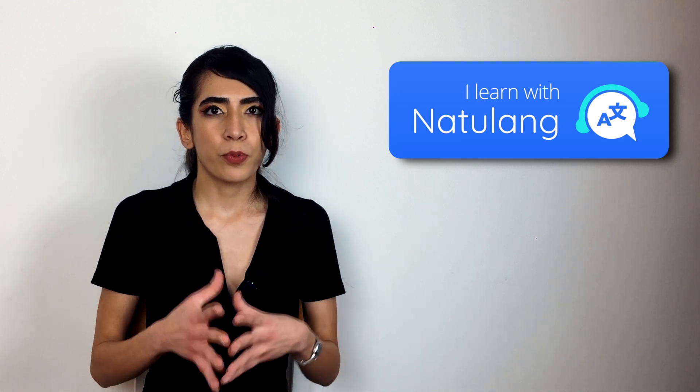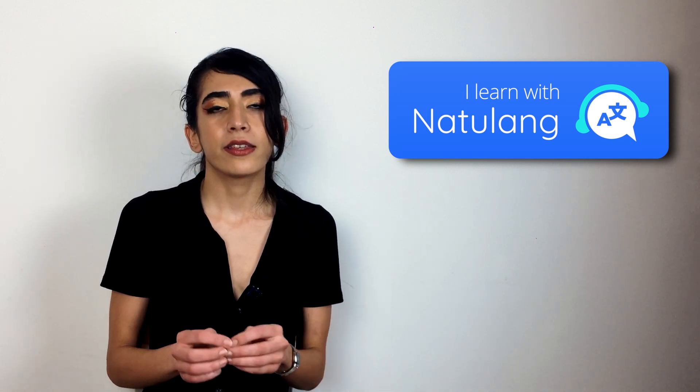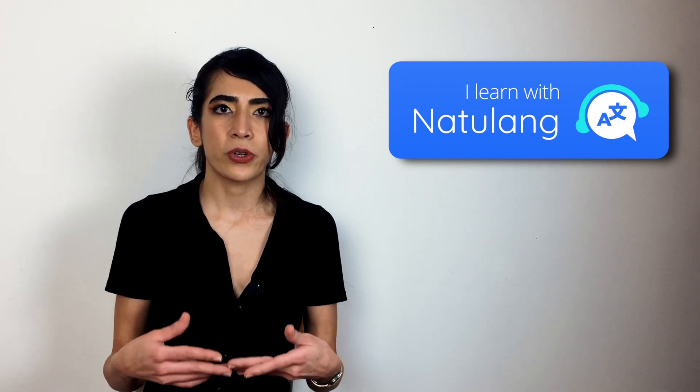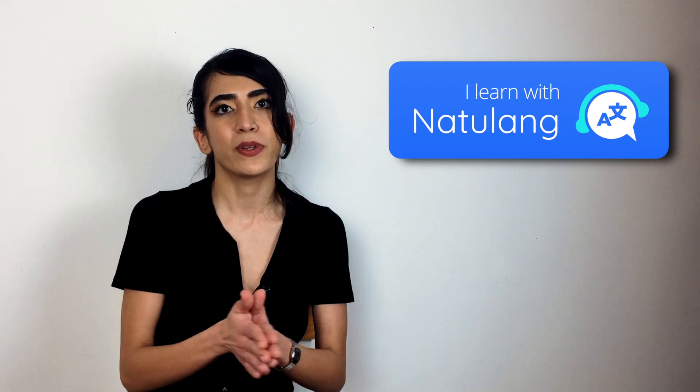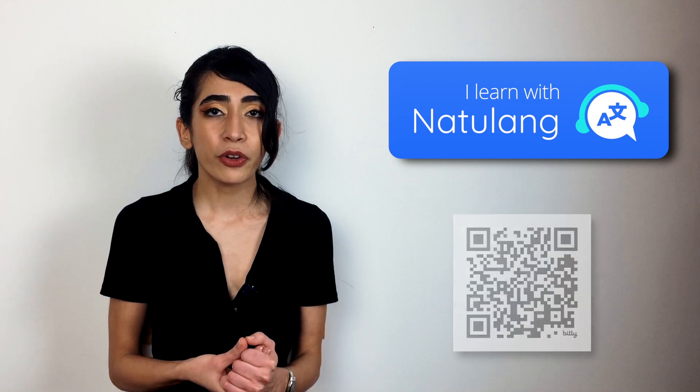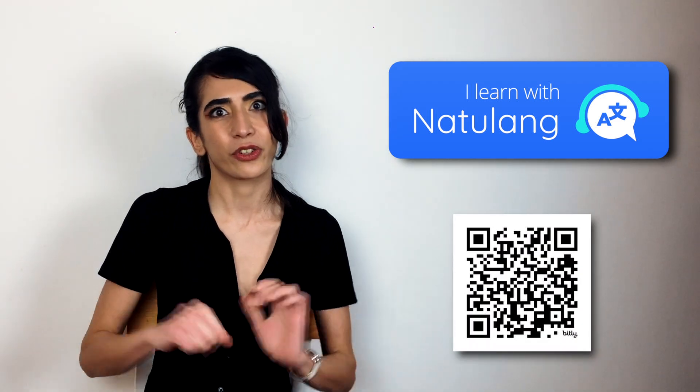To help you learn languages with a speech-centric approach, we have developed an app called Natural Language. When you learn a new sentence in Natural Language, you first hear it spoken with a native accent. This eliminates the possibility of mispronouncing or misplacing stress and simplifies the process of adapting to the rhythmic structure of a foreign language. You can download Natural Language using the QR code or by following the link in the description.